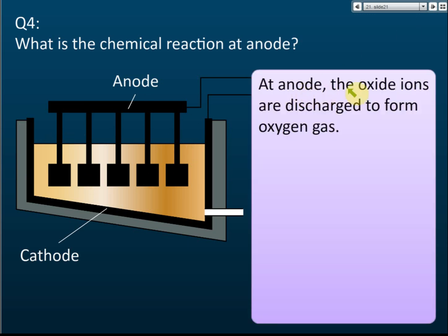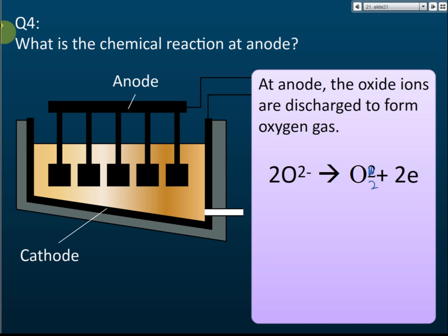At the anode, the Oxide ions are discharged to form Oxygen gas. Two Oxide ions lose electrons and form O₂ gas. Because Oxide ions carry a negative charge, they move to the anode.